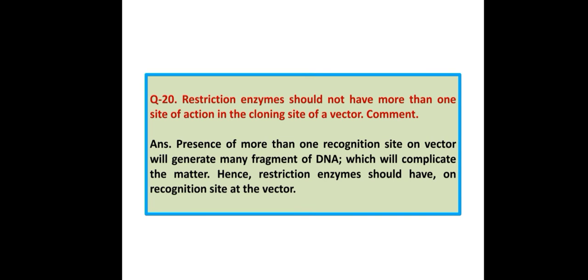Restriction enzymes should not have more than one site of action in the cloning site of a vector. Comment. Answer: Presence of more than one recognition site on a vector will generate many fragments of DNA, which will complicate the matter. Hence, restriction enzymes should have only one recognition site on a vector.